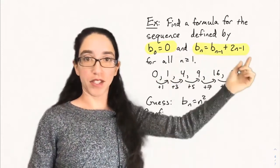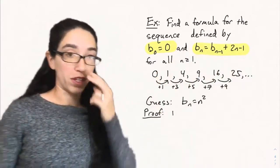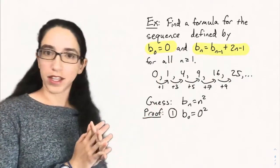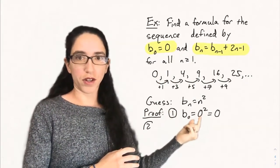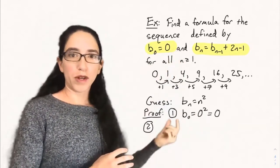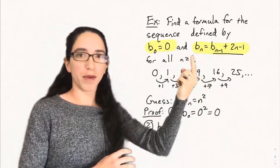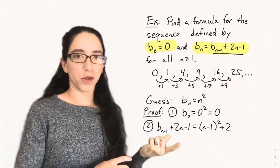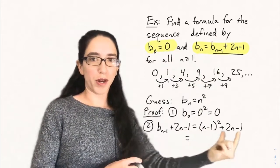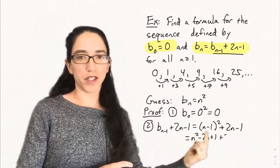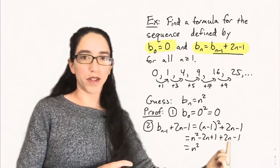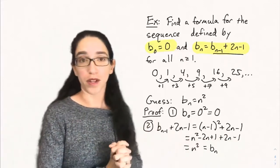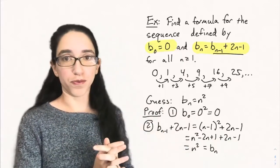To prove that something satisfies a recursion, there are only two steps using our shortcut. First, we do basically the base case: show the initial condition is satisfied. For b₀, 0 squared is indeed 0, which matches. Now we want to show the formula satisfies the recursion. If we plug in bₙ equals n² and bₙ₋₁ equals (n−1)², starting on the right-hand side: bₙ₋₁ plus 2n−1 gives (n−1)² plus 2n−1. Expanding (n−1)² gives n² minus 2n plus 1. The 2n's cancel and the 1's cancel, and we just get n², which is bₙ. That's exactly what we wanted to show.